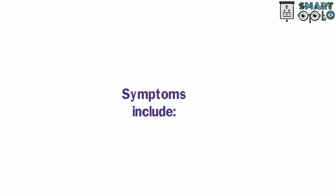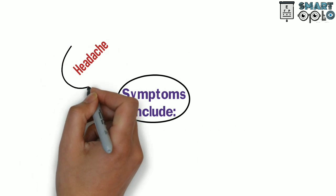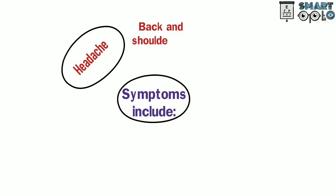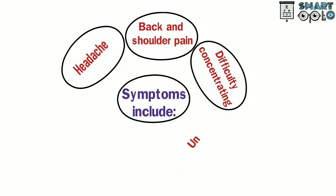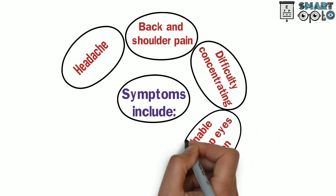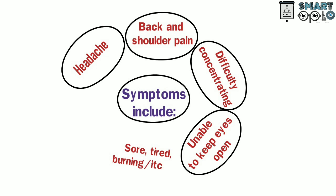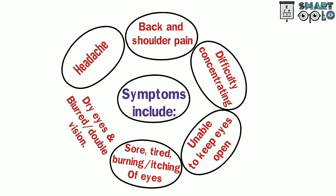What are the symptoms for computer vision syndrome? The symptoms include headache, back pain and shoulder pain, difficulty concentrating, unable to keep eye open, sore, tired, burning or itching of eyes, and dry eye and blurred or double vision.